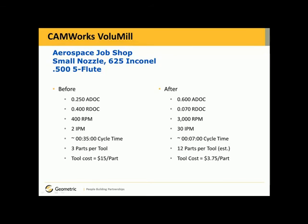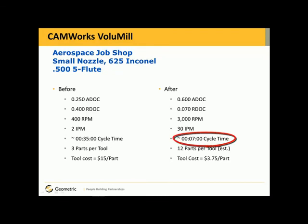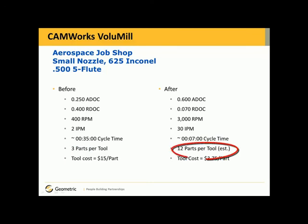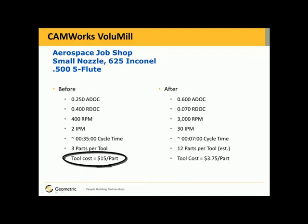What really counts here? Cycle time and cost. Before Volume Mill, the cycle time was thirty-five minutes; after, it took only seven minutes. Before Volume Mill they were only getting three parts per tool; now with Volume Mill they're getting twelve parts per tool. Total cost is three dollars and seventy-five cents per part versus fifteen dollars per part without Volume Mill — a tremendous amount of savings. This is actual data from a manufacturing shop.